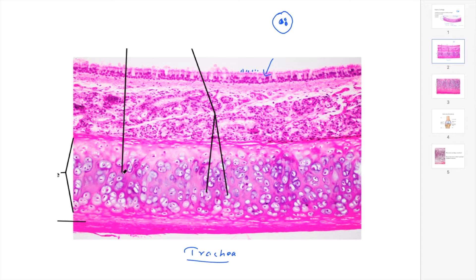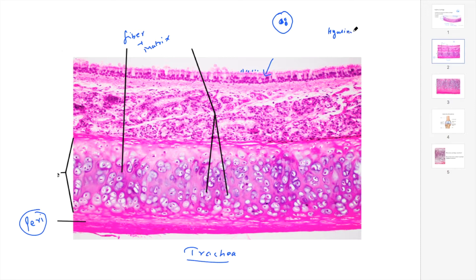There appears to be some kind of fiber or matrix visible here — I think it looks like fiber but I won't be too specific. This area is where you can find the chondrocytes, and this outer area is also the perichondrium, since 'peri' means surrounding. Also worth noting: the term 'hyaline' comes from Greek and means glassy in appearance, which is why it's called hyaline cartilage.